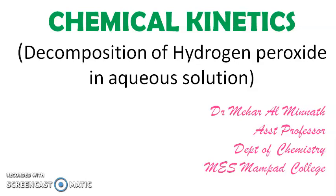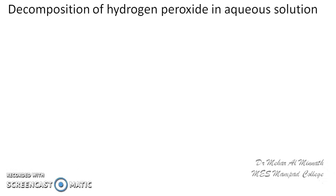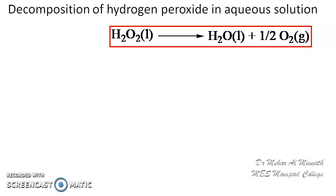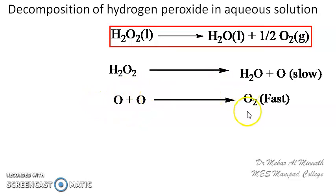As an example, we shall take up the decomposition of hydrogen peroxide in aqueous solution and how we carry out kinetic studies using the titration method. The decomposition of hydrogen peroxide can be represented as: hydrogen peroxide (liquid) giving water plus oxygen. When the mechanism of this reaction was studied, it was found that the reaction has two steps: hydrogen peroxide first undergoes decomposition to water and an oxygen atom, and then two oxygen atoms combine to form an oxygen molecule.